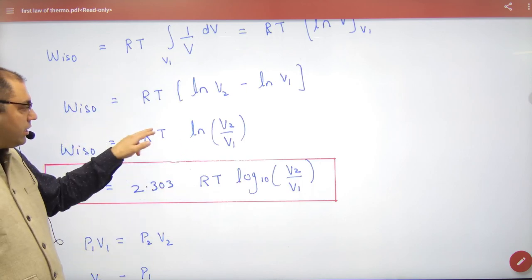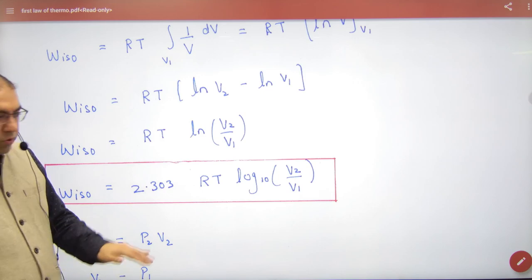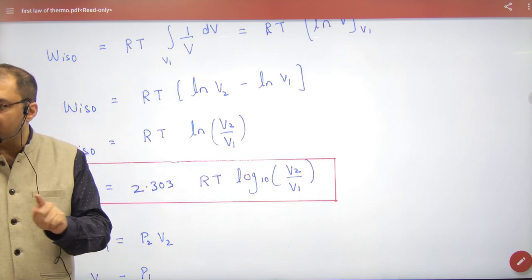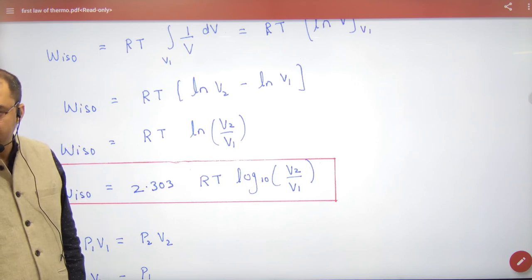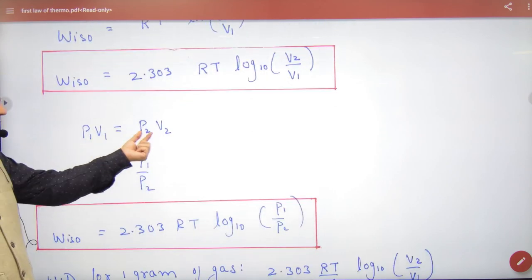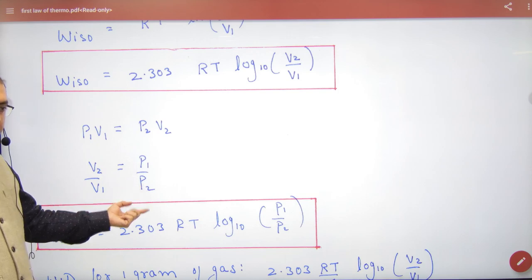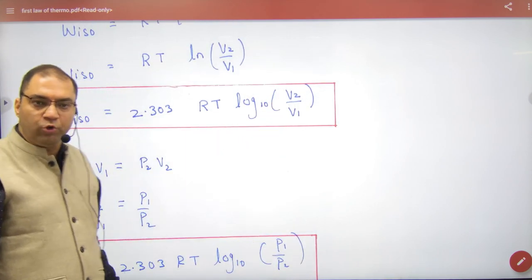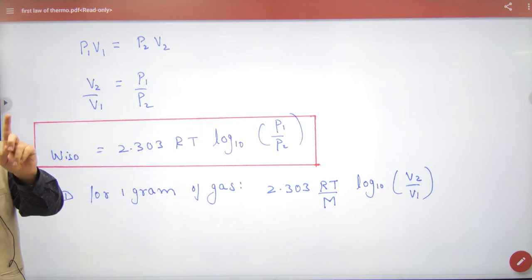If you have this log to make it to the base 10, remember to multiply this 2.303. So this formula comes to work done in isothermal process one mole of gas. Clear here, so one mole of gas. And because one mole is P1 V1 P2 V2, so here V2 by V1 is P1 by P2.